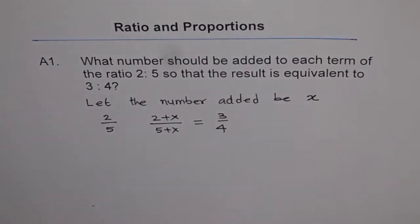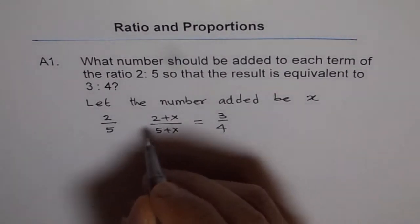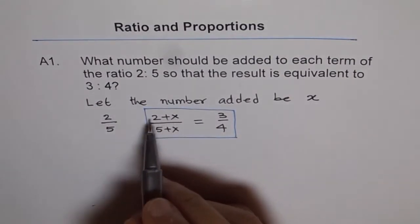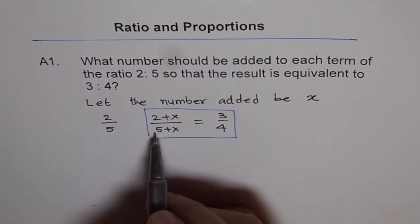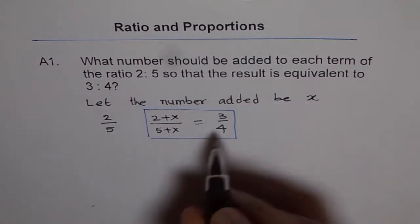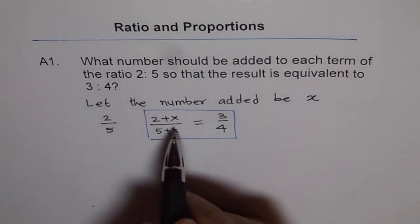So, what number x should we add to this ratio of 2 over 5 so that we get a new ratio of 3 is to 4? So, this is the question. So, let us try to solve this problem now. So, to find this number, let us cross multiply.